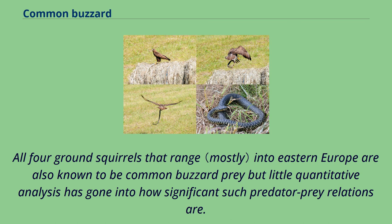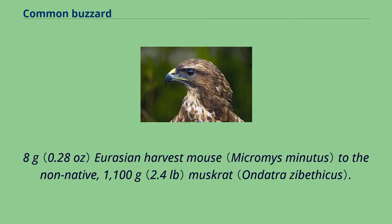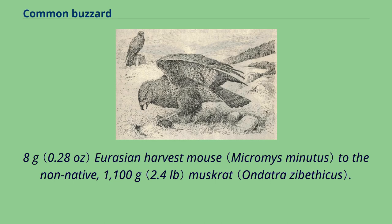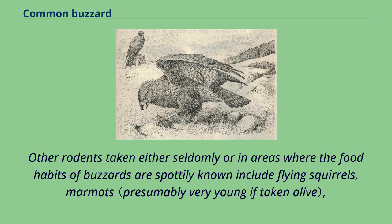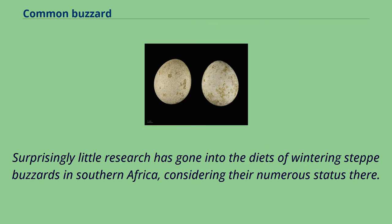Other rodents taken either seldomly or in areas where food habits of buzzards are spottily known include flying squirrels, marmots, chipmunks, spiny rats, hamsters, mole rats, gerbils, jerboas and occasionally dormice, although these are nocturnal. Surprisingly little research has gone into the diets of wintering steppe buzzards in southern Africa, considering their numerous status there. However, it has been indicated that the main prey remains consist of rodents such as the four-striped grass mouse and Cape mole rats.